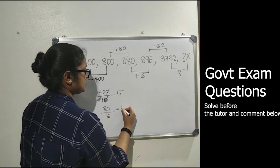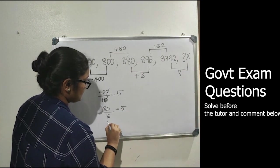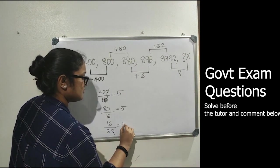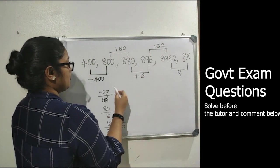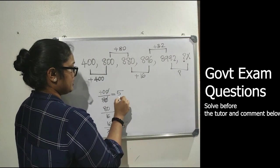And also 16 by 3.2 equals 5. So that is 400 into 1 by 5.